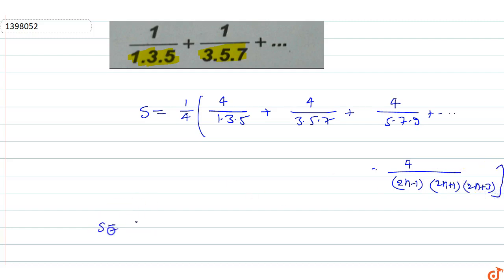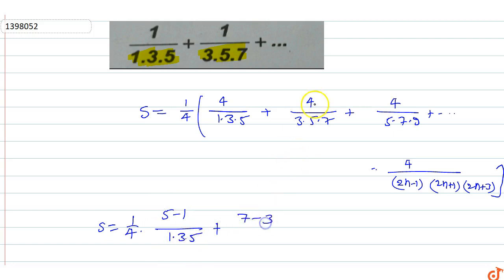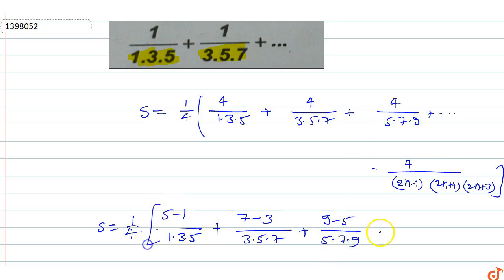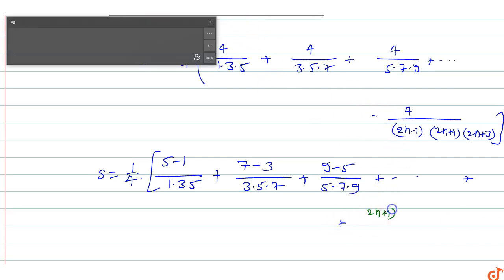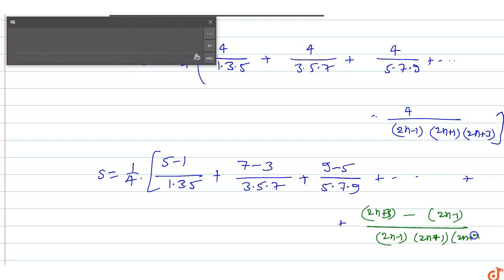So S is equal to 1 by 4 times all of this. Now 4 in the numerator: we write 5 minus 1 upon 1 into 3 into 5, plus 7 minus 3 upon 3 into 5 into 7, plus 9 minus 5 upon 5 into 7 into 9, and the general term numerator is (2n plus 3) minus (2n minus 1) upon (2n minus 1)(2n plus 1)(2n plus 3).